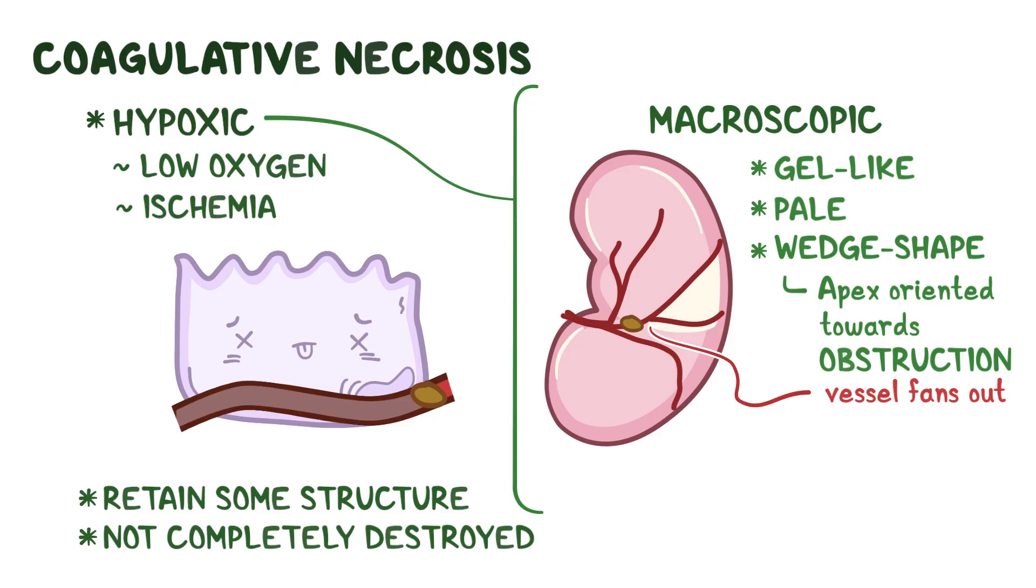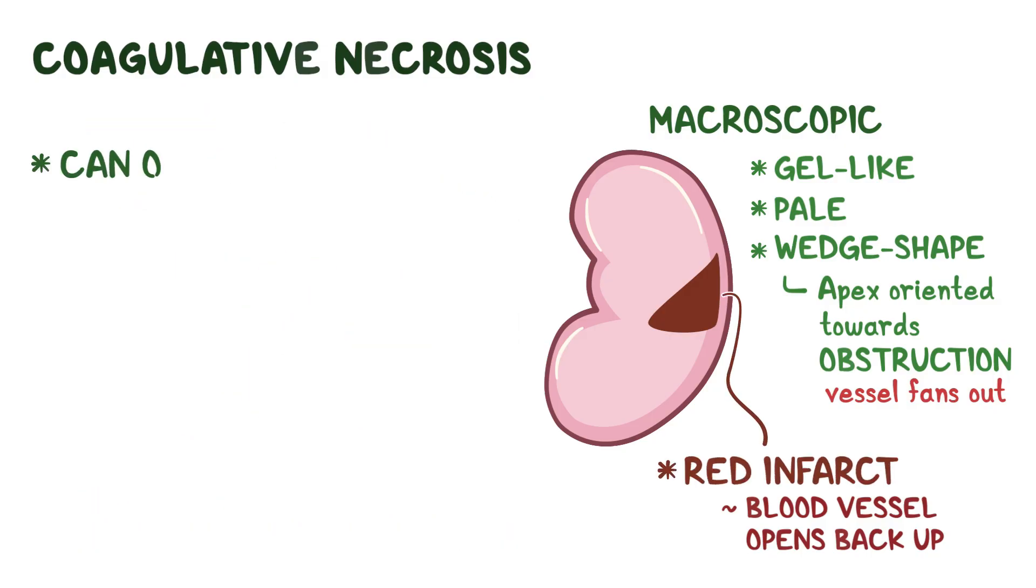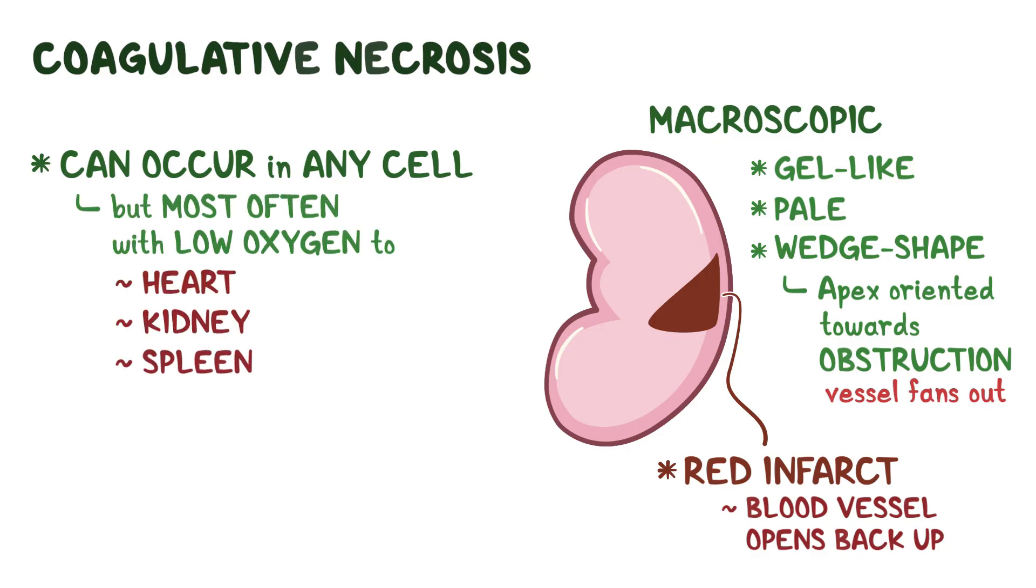Occasionally, blood re-enters the area of necrosed tissue, like if a blocked blood vessel opens back up, and when that happens, it gives the tissue a dark red color, and it's called a red infarct. Coagulative necrosis can occur in any cell of the body, but it occurs most often when there's low oxygen to the heart, kidneys, or spleen tissue.